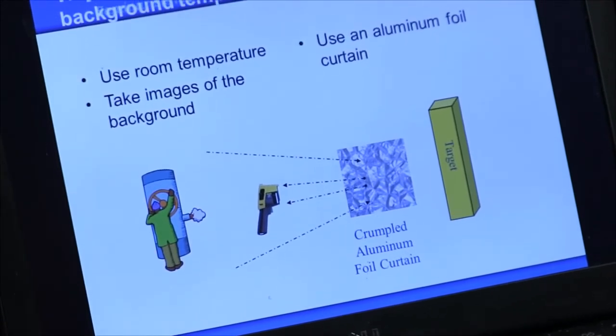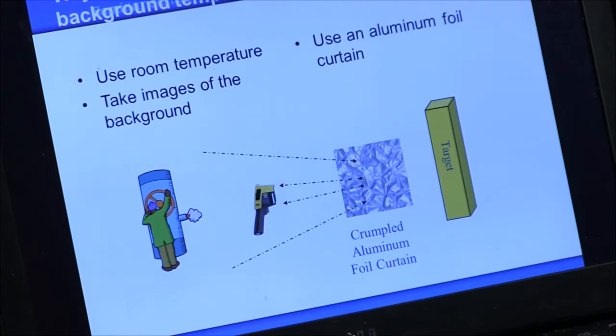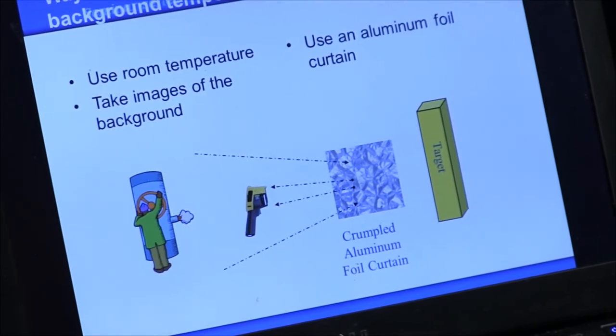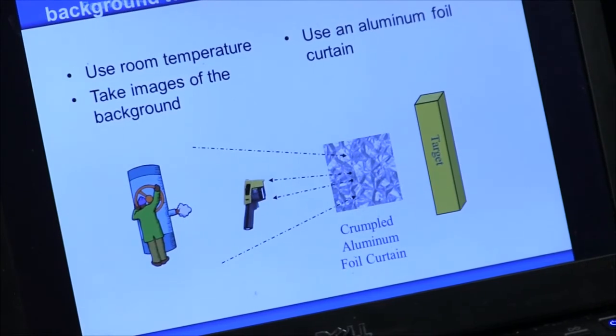For the background temperature, first we can use the room temperature if you're not quite sure. You can take a sheet of paper and hang it up, then take the temperature of the paper after it's been there for a while. Another method is to take a background image of one of the walls if it's been at a stable temperature.